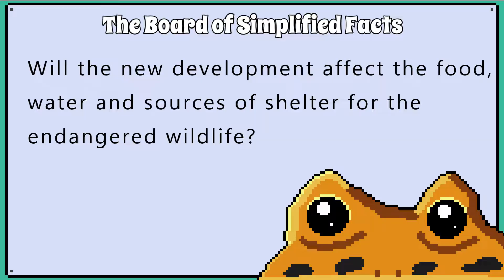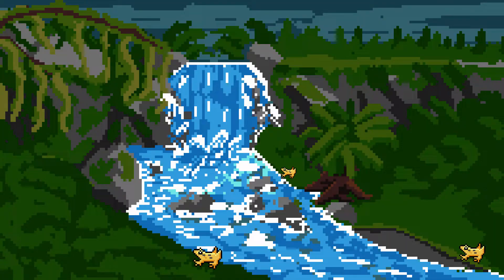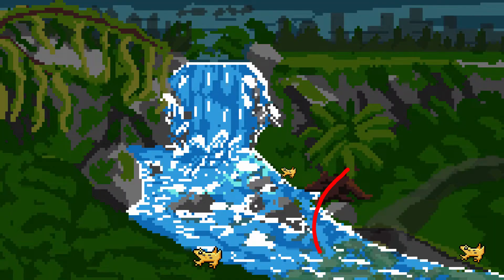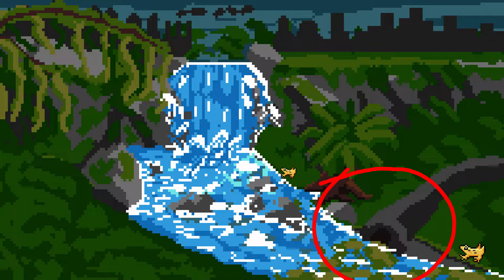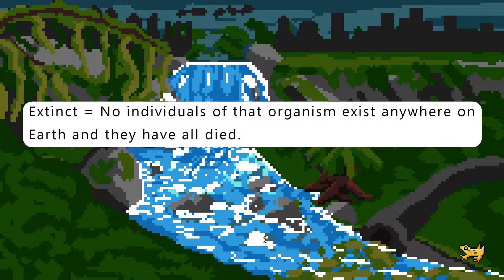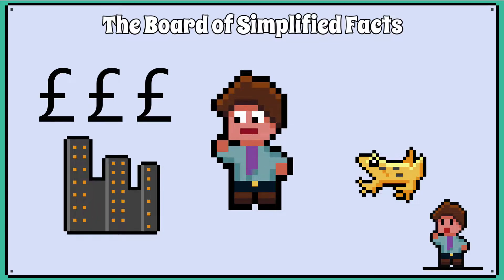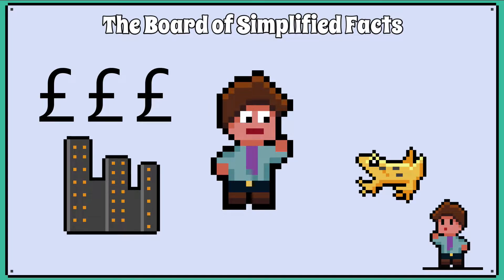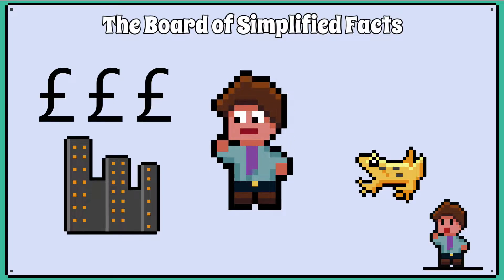The worst case scenario is that the development affects an endangered species to the point it becomes extinct. This means no individuals of that organism exist anywhere on Earth and they have all died. Based on the data collected, a decision is made whether a development can be approved or not.